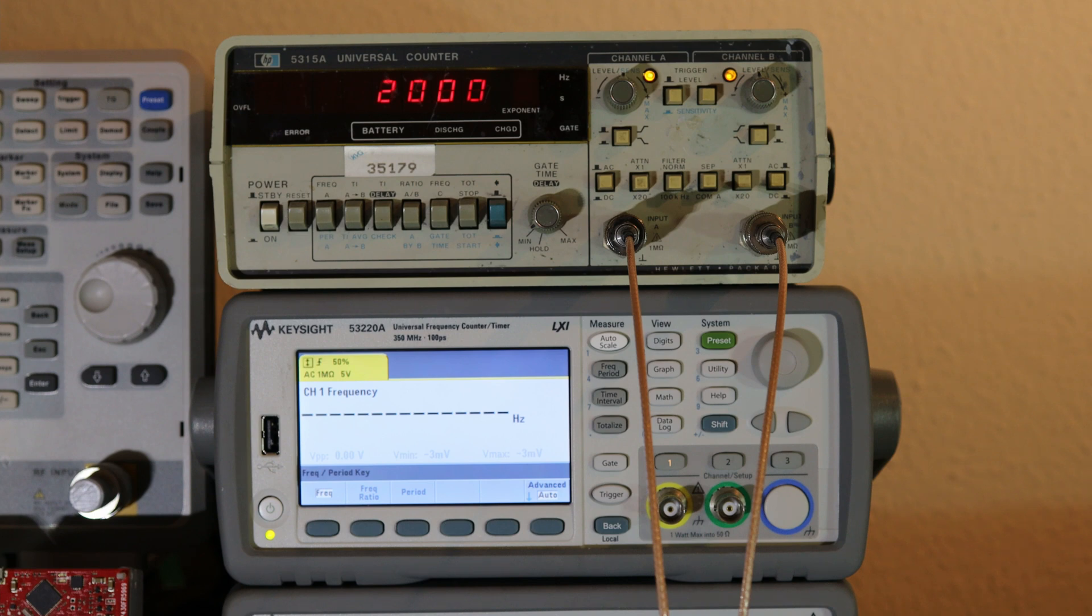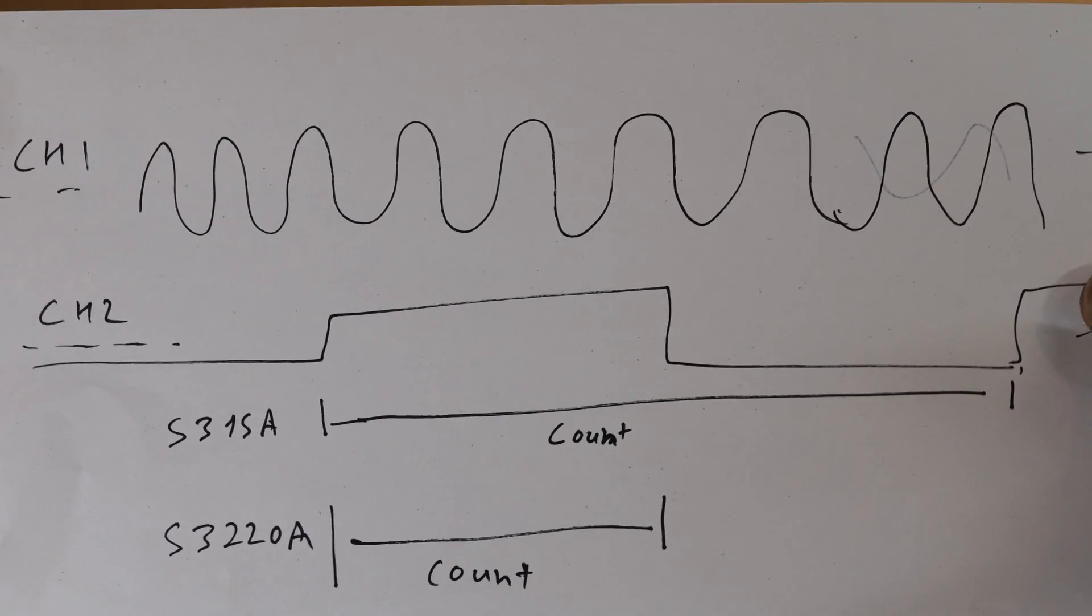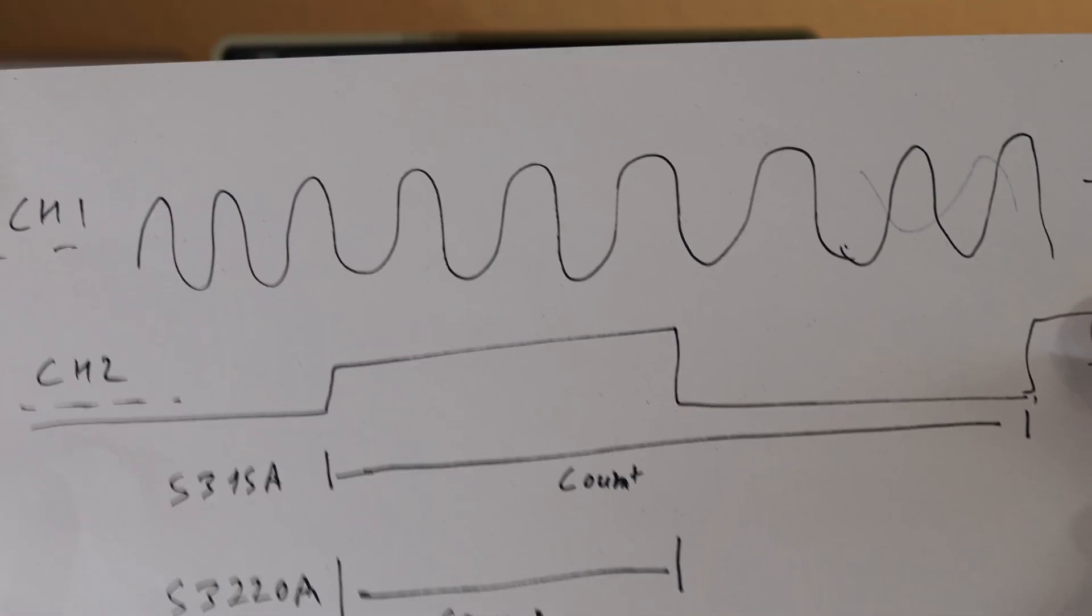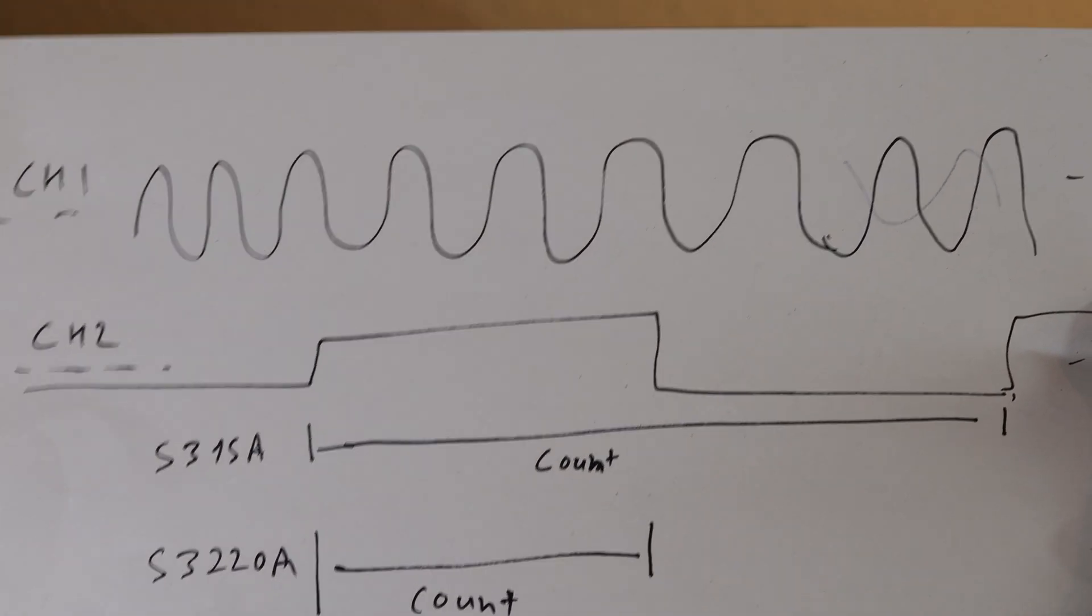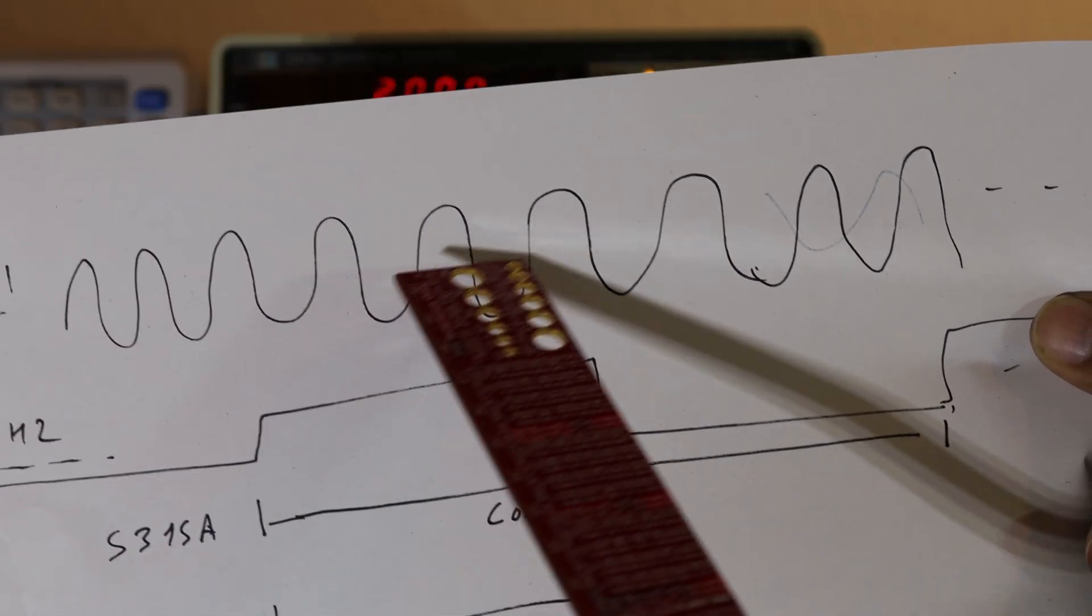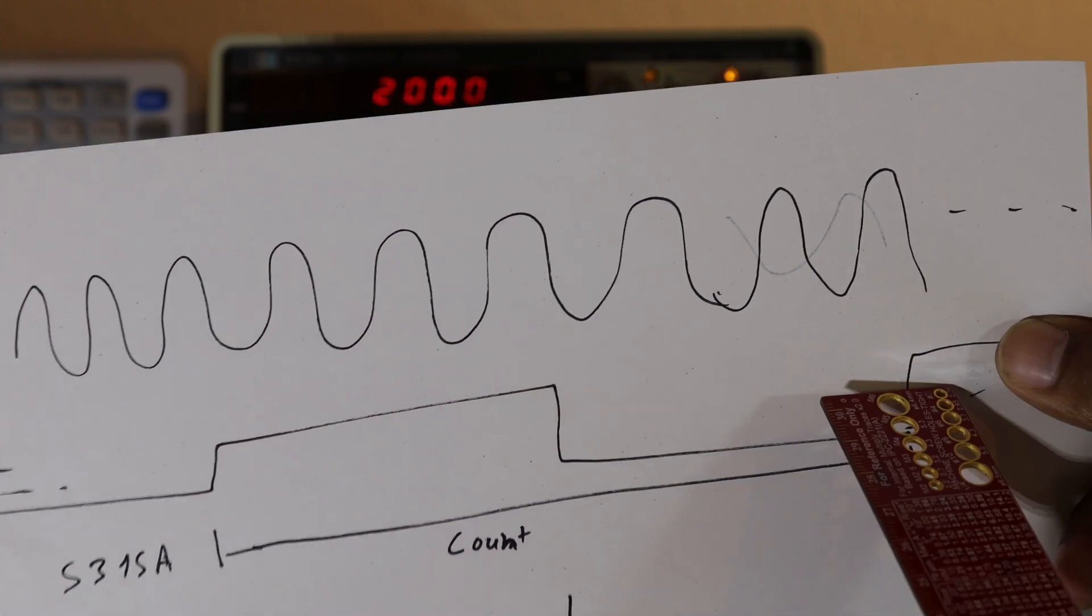This video is only about one particular feature: both instruments performing totalization on channel 1 against gate on channel 2. The 5315A has input signal connected to channel 1 which is input A, and gate signal connected to channel B. Just to have a brief idea of what I am going to measure: there's going to be an input signal on channel 1 and on channel 2 is going to be a gate. The gate is going to be a square wave and the instrument is supposed to count how many pulses on channel 1 are there in the period of gate time.